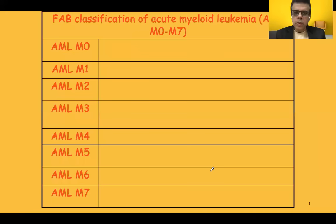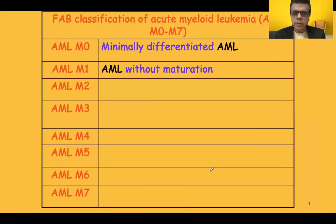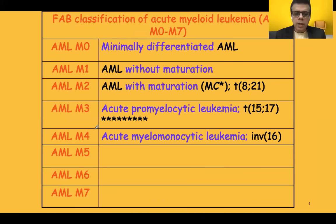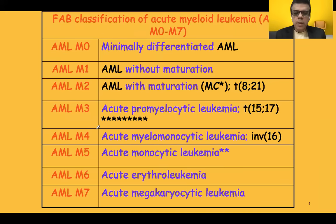We need to know certain common AML FAB subtypes that are commonly asked. You may be given the nomenclature directly, or just the number — for example, AML M3 might be given, or acute promyelocytic leukemia might appear as an option. AML M0 is minimally differentiated AML; M1 is without maturation; M2 is with maturation, where differentiation of blast into myeloid elements is progressive. The most commonly asked subtype is AML M2.